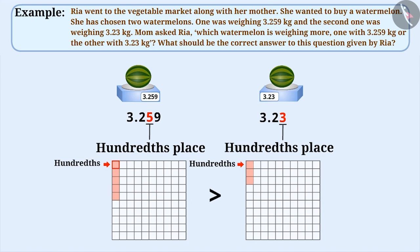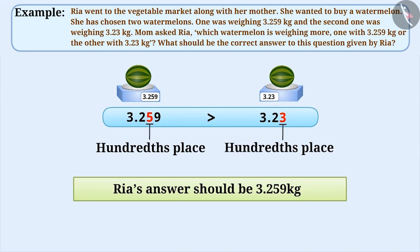Since 5 hundredths is greater than 3 hundredths, we can say that 3.259 is greater than 3.23. Thus, Ria's answer should be 3.259 kg.